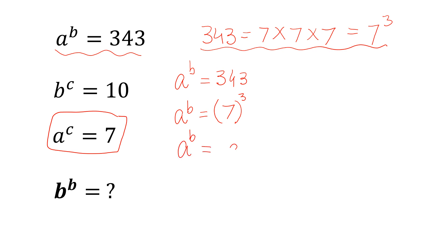So a to the power of b equals a to the power of c, all to the power of 3. We can multiply the powers and write a to the power of b equals a to the power of 3c. Now the bases are the same, so we can write b equals 3c.